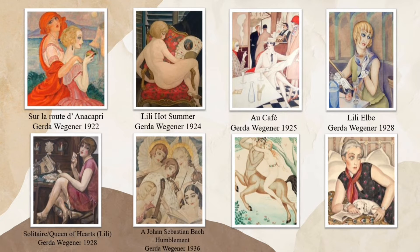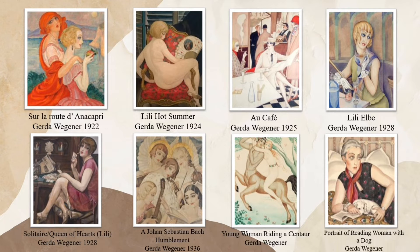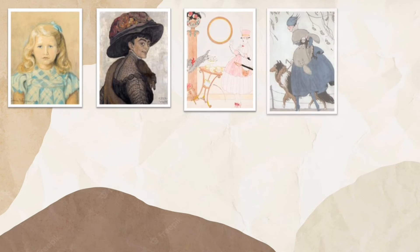The first painting is 'Solar Route Diana Capri' (1922), 'Lily Hot Summer' (1924), 'Hook Cafe' (1925), 'Lily Elbe' (1928), 'Solitaire or Queen of Hearts Lily' (1928), 'A Johan Sebastian Bach Humblement' (1936), and 'Young Woman Riding a Centaur' and 'Portrait of Reading Woman with a Dog' — the dates of the last two paintings were not identified.